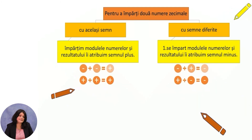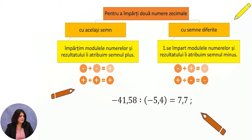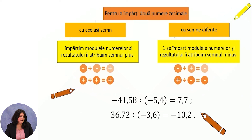To divide two decimal numbers with the same sign, we divide the absolute values and assign the plus sign — minus divided by minus equals plus, plus divided by plus equals plus. For example, minus 41.58 divided by minus 5.4 equals 7.17. To divide two decimal numbers with different signs, we divide the absolute values and assign the minus sign — minus divided by plus equals minus, plus divided by minus equals minus. So 36.72 divided by minus 3.6: plus divided by minus gives minus, result is minus 10.2.